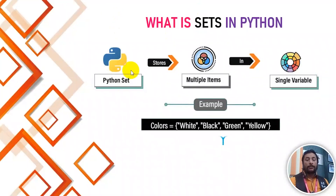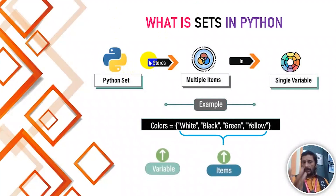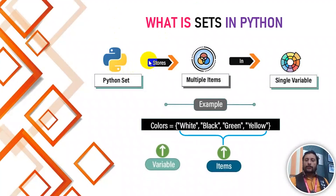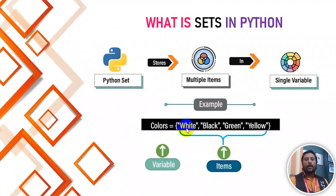In a Python set, this is a collection. We can store multiple items in a single variable — for example, colors: white, black, green, yellow. We can store a few data items. We can store items using curly braces.